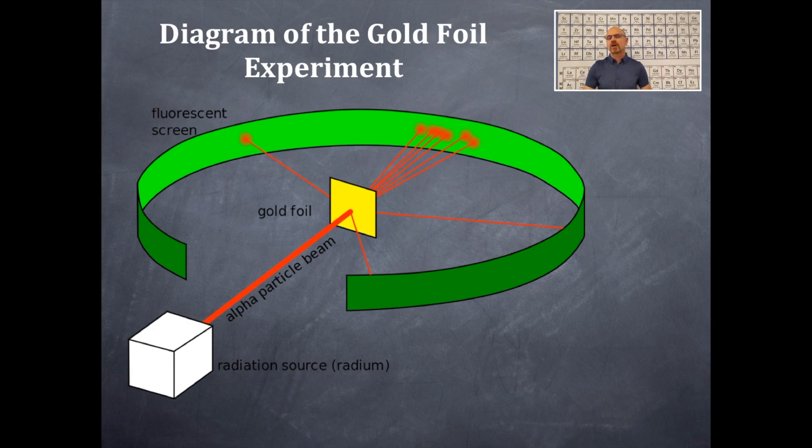The red beam is a stream or a diagram of a stream of alpha particles. The green circular thing was a fluorescent screen. That fluorescent screen was able to detect the alpha particles as they either traveled through the gold foil, were deflected by something in the gold foil, or bounced back.